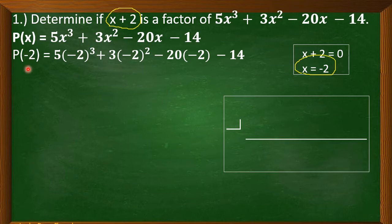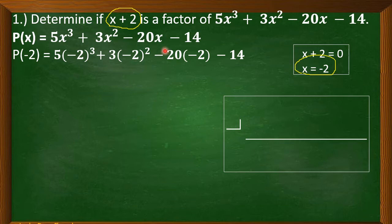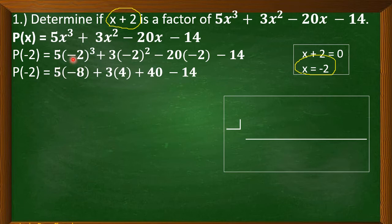So we have p of negative 2 equal to 5 times negative 2 to the power of 3, plus 3 times negative 2 squared, minus 20 times negative 2, bring down minus 14. We simplify: negative 2 cubed is negative 8, so negative 2 times negative 2 times negative 2. Negative 2 squared is 4, so negative 2 times negative 2. And negative 20 times negative 2 is positive 40. Bring down negative 14.